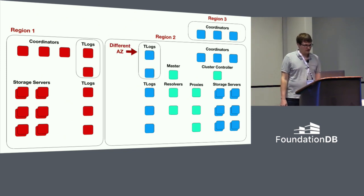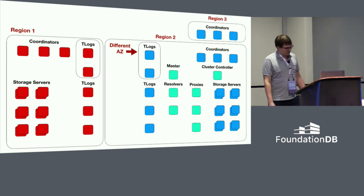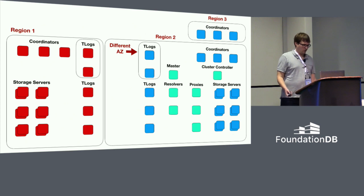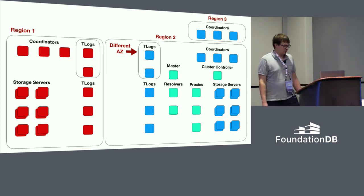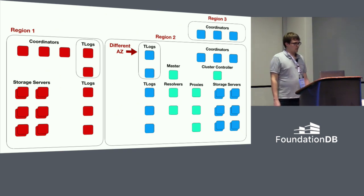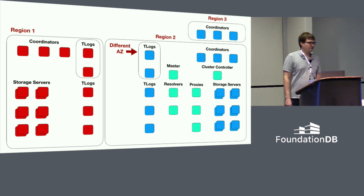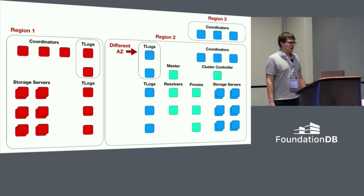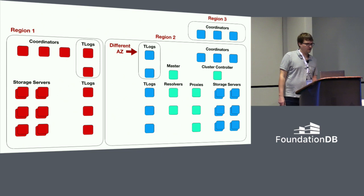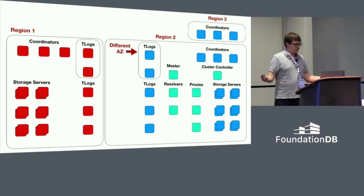You have the option of having a different availability zone on the second side, which might give you better failure properties when failing back to the first side, although it's optional to configure. For the coordinators, you'll notice there's a third region here that has some coordinators in it. The coordinators rely on quorum-based logic for failure properties, so we need a majority of them alive. If we want the failure property of surviving one region failure plus one additional machine failure, three coordinators in three different regions is a nice way to accomplish that. Losing a region takes down three copies, an additional machine takes down four, and with nine total, you still have a majority.